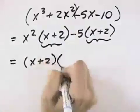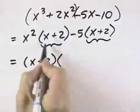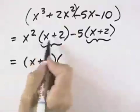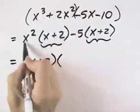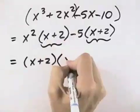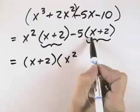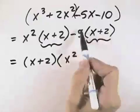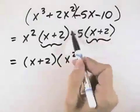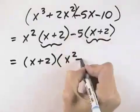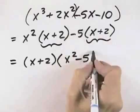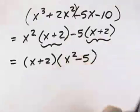When I divide that out from the first term — if I divide out the x plus 2 — that's going to leave the x squared. When I divide the x plus 2 out of the second term, it leaves the negative 5, giving x squared minus 5.